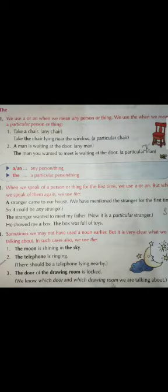Sometimes we may not have used a noun earlier, but it is very clear that we are talking about it. In such cases also, we use the article THE. For example: 'The moon is shining in the sky' — we never say 'a moon is shining in a sky.' We always use THE. Similarly, 'The telephone is ringing' and 'The door of the drawing room is locked' — we know which door and which drawing room. When we know exactly what thing or person we are focusing on, we use the article THE.